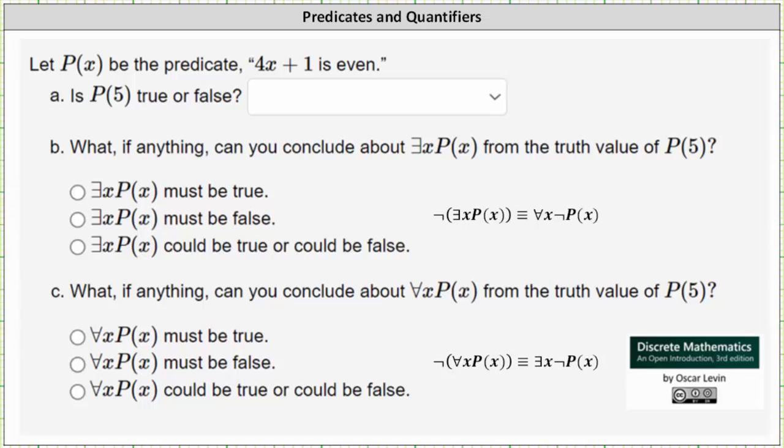Let P of x be the predicate 4x plus 1 is even. Is P of 5 true or false? P of 5 is the statement 4 times 5 plus 1 is even. And 4 times 5 plus 1 is equal to 20 plus 1 or 21. 21 is even is false since 2 is not a factor of 21, and therefore P of 5 is false.